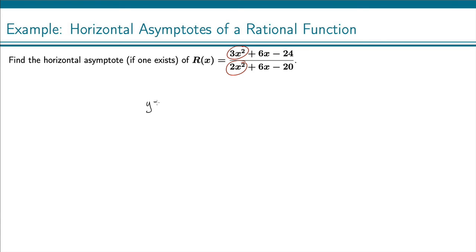So we get y equals 3 halves and that is our horizontal asymptote. It's as simple as that, you only have to look at the leading terms.